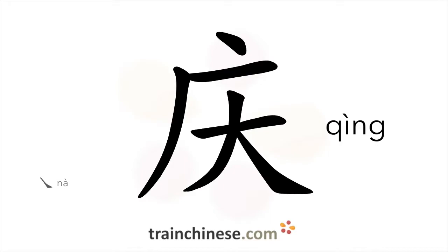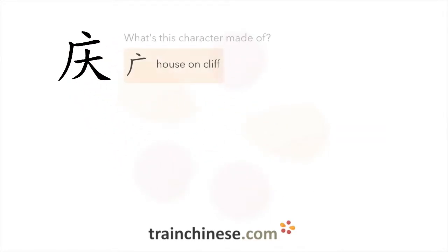So what components is this character made up of? This is the house on cliff radical.